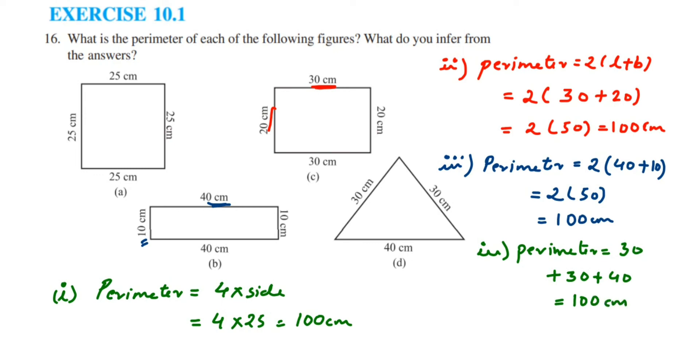Now we have found the perimeter of all the given figures. We have to observe what we got here. You can see that the perimeter of each and every figure is 100 centimeters. So the conclusion is: all figures have the same perimeter.